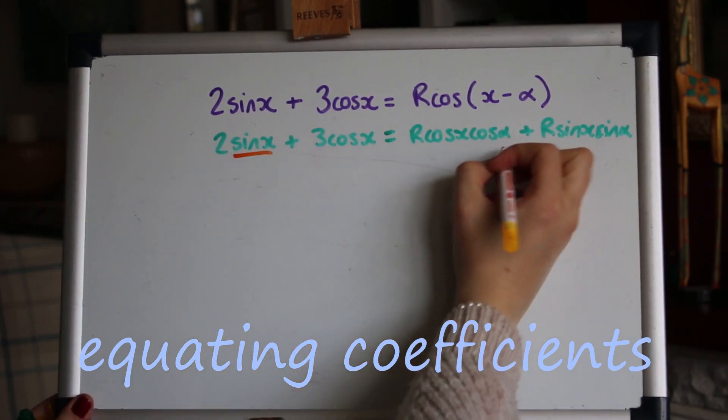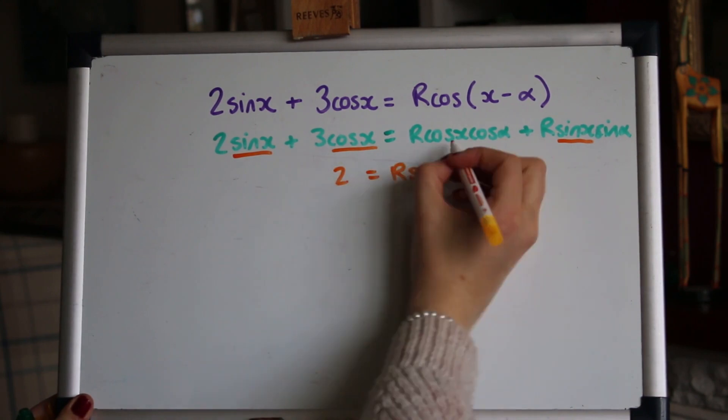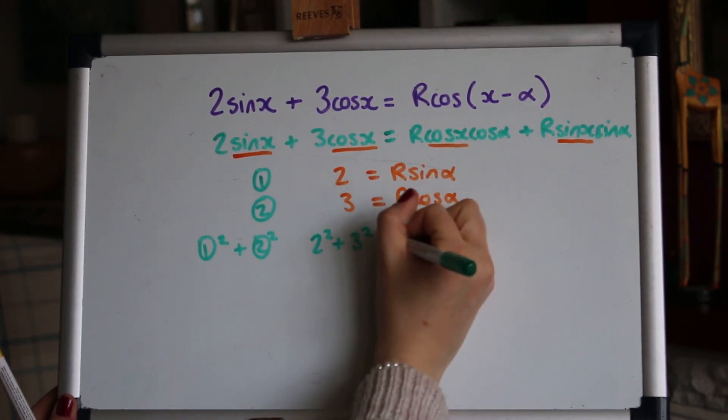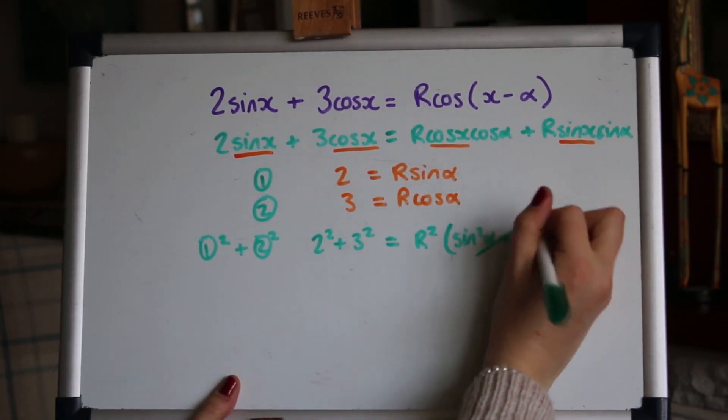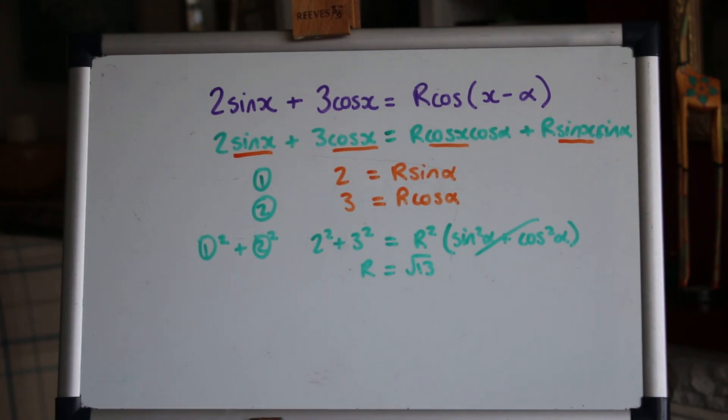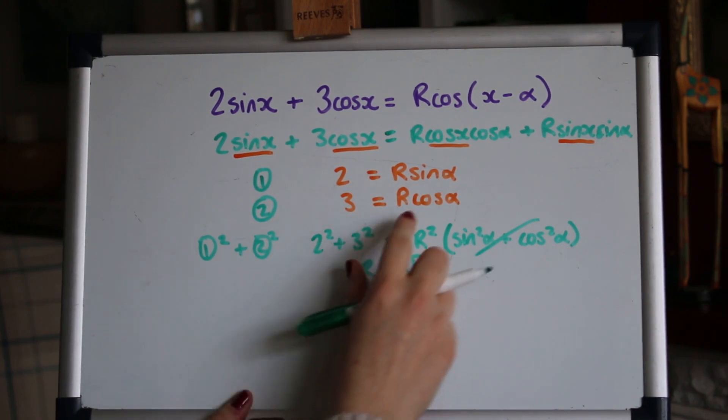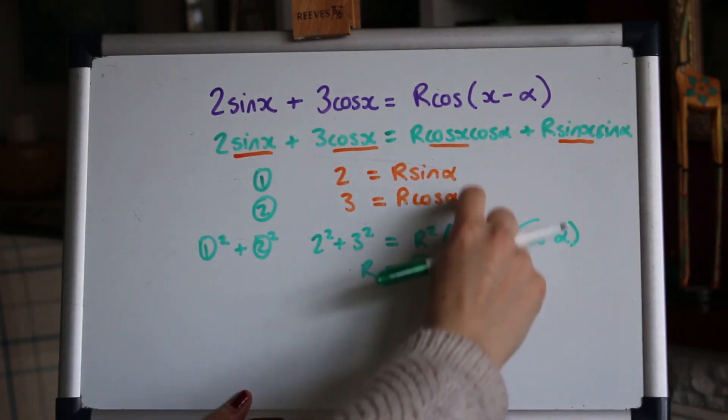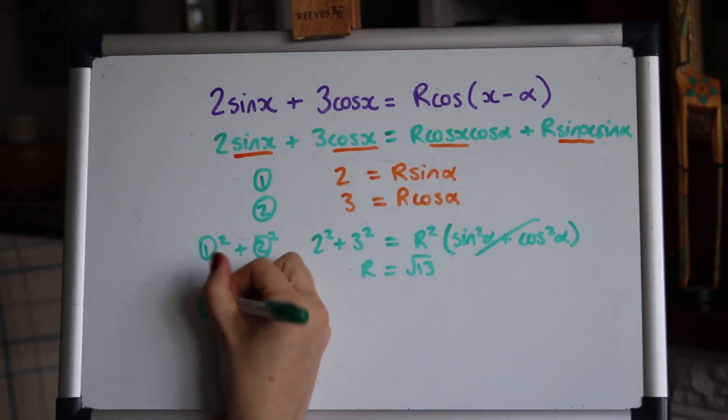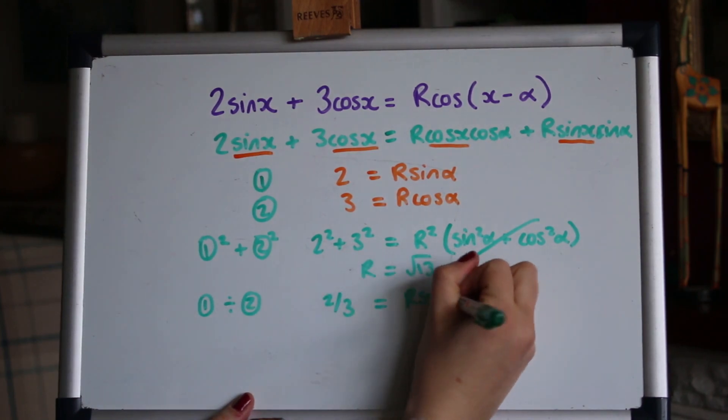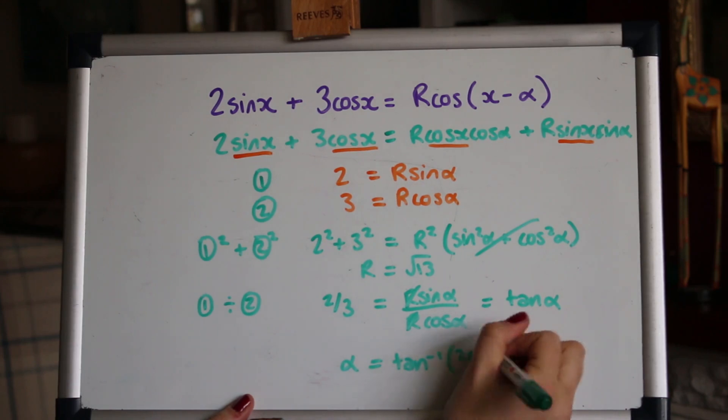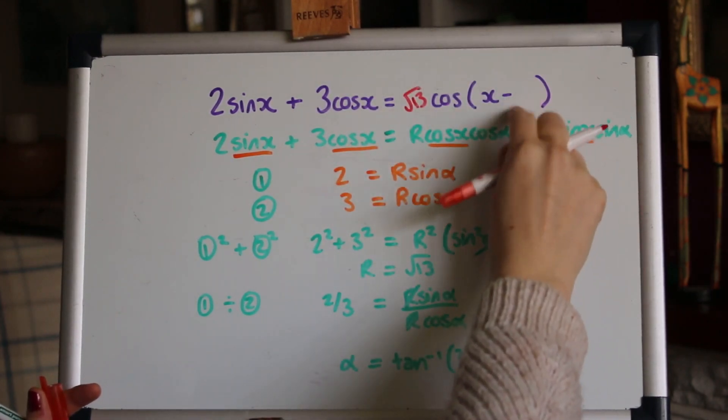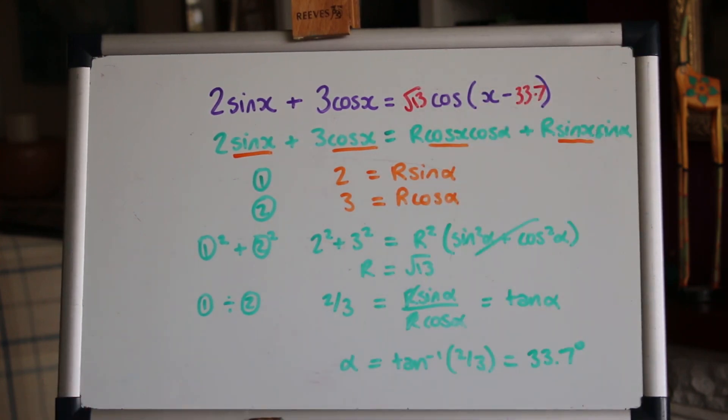Again I'm going to do what's called equating coefficients. Same thing as before, we're going to square and add them together. And I actually get the same R as before, which is no surprise. But what will be different is the angle because it will go the other way round now. So remember to get this the right way round. Tan is sin divided by cos. So now we'll do equation 1 divided by equation 2. It's the other way round from before. So there we go, we found that R is again √13, and this time α is 33.7.